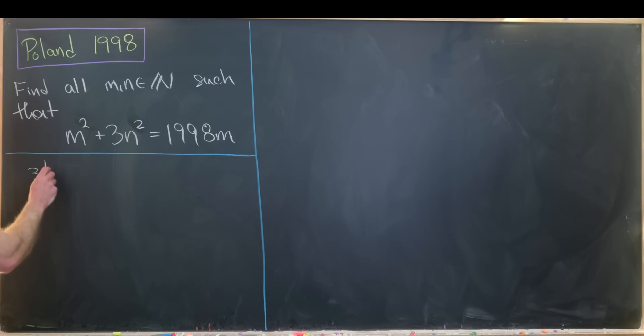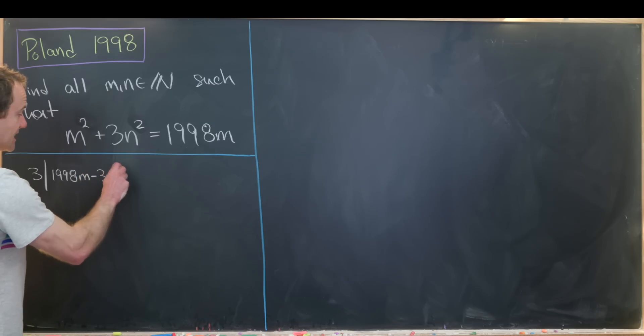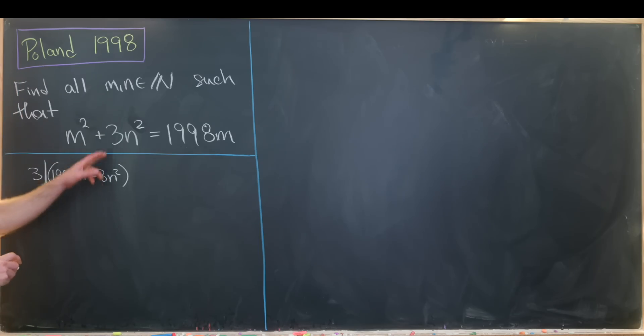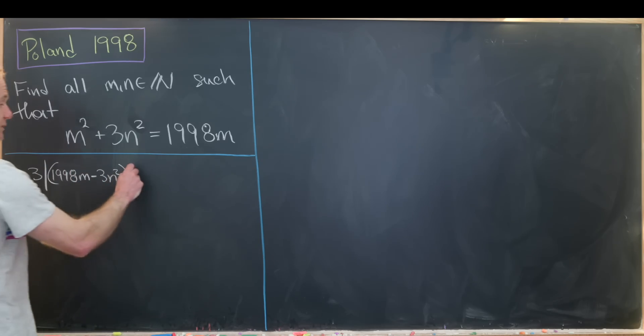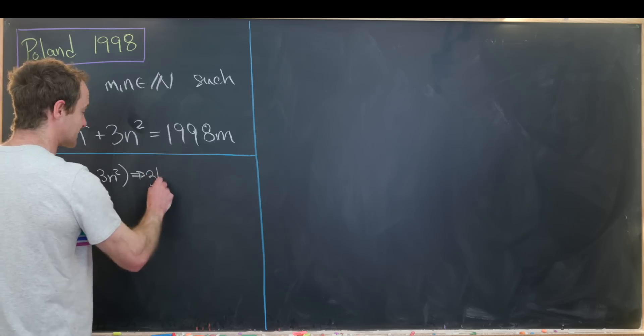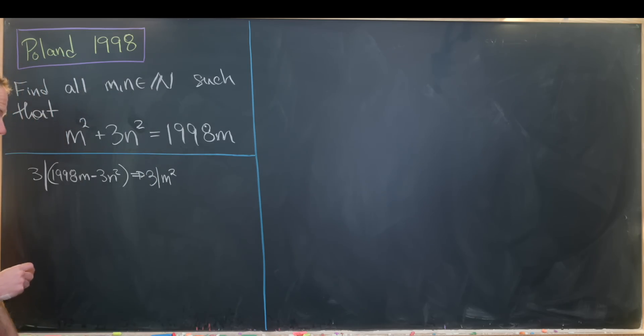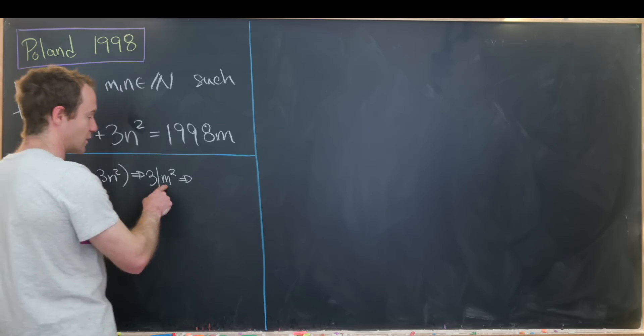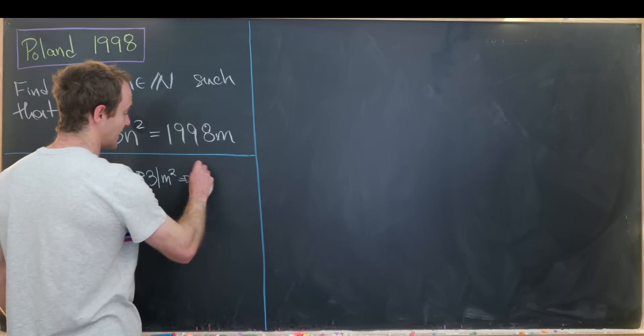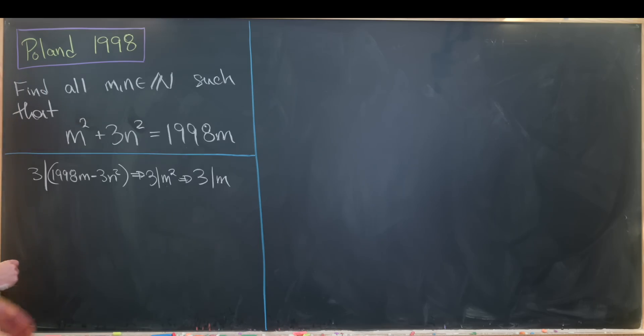So 3 divides 1998m minus 3n squared. Notice it most definitely divides 3n squared, but 1998m minus 3n squared is equal to m squared. So that means 3 divides m squared. But now if 3 divides m squared, that in fact tells us that 3 also divides m because 3 is a prime.